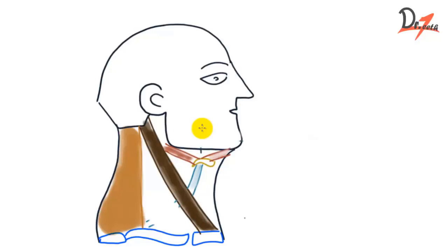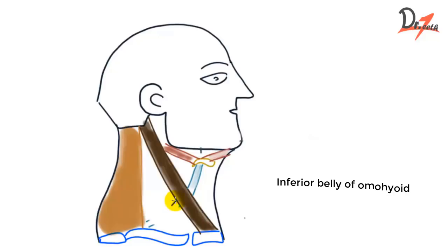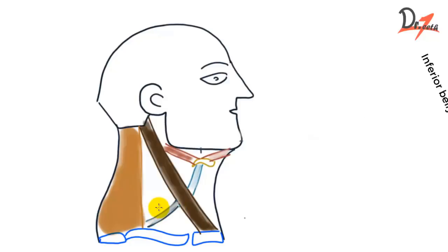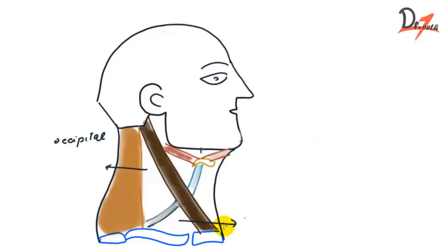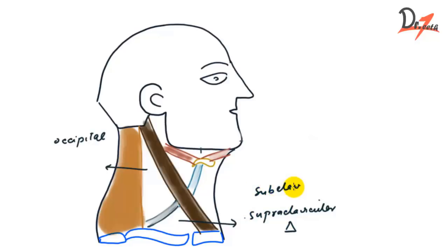Coming to the posterior triangle of the neck, we have the inferior belly of the omohyoid here. This belly divides the posterior triangle into two smaller triangles. This is the occipital triangle, and this right here is the supraclavicular triangle, which is also called the subclavian triangle.